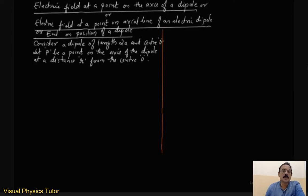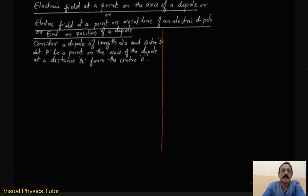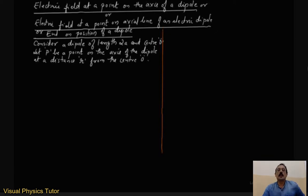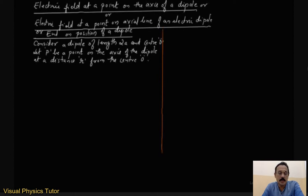Hello dear students, welcome to the channel Visual Physics Tutor. Today you will be learning about the electric field at a point on the axis of a dipole, or electric field at a point on the axial line of an electric dipole. This can also be called the electric field at the end-on position of a dipole.